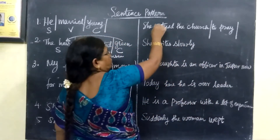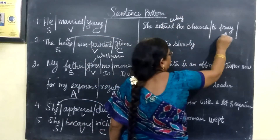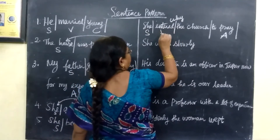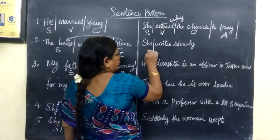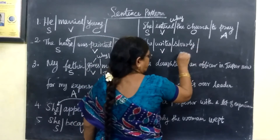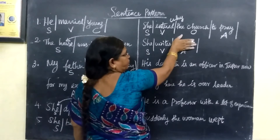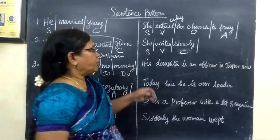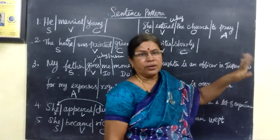Why did she enter? To pray — that is the adjunct. 'She' is the subject, 'entered' is the verb, and the reason 'to pray' is the adjunct. Similarly, 'she writes' — 'she' is the subject, 'writes' is the verb, and the adjunct answers the question. 'She writes' — the sentence is complete with just subject and verb.